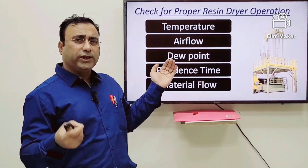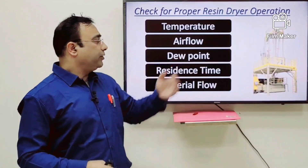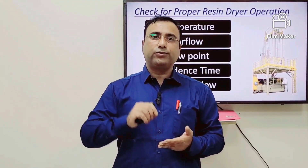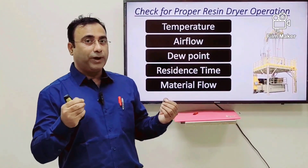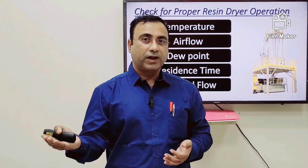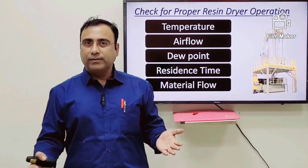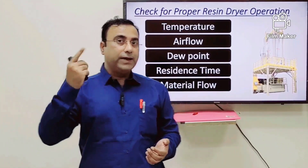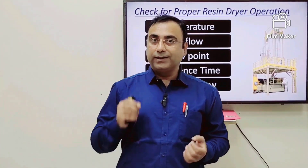For dew point, measure it if you have the meter; if not, pay attention to residence time. PET resin suppliers provide a temperature chart showing temperatures from 170 to 180 degrees varying with residence time — if you use lower temperature, residence time should be increased. If operation is running normally this issue won't arise, but if there is a breakdown on the line, the residence time of PET material will increase.